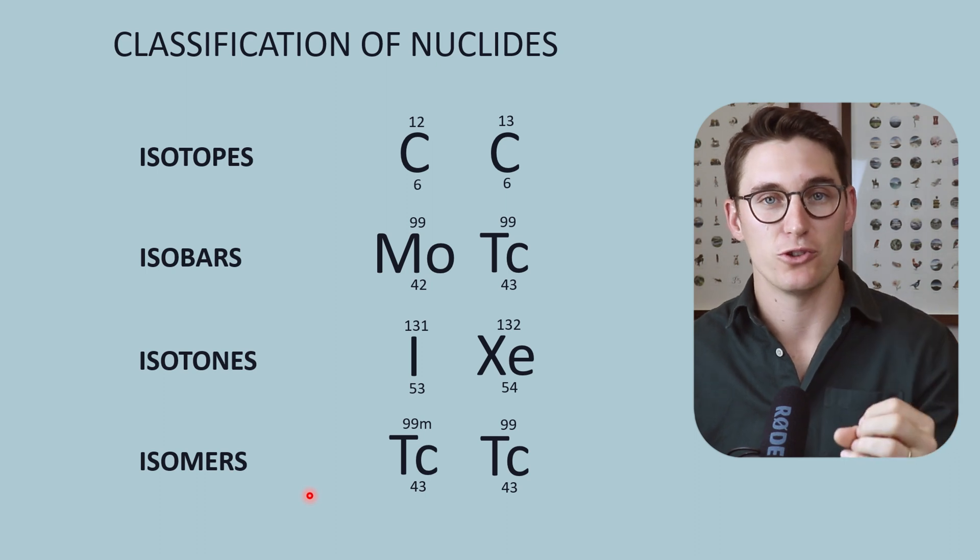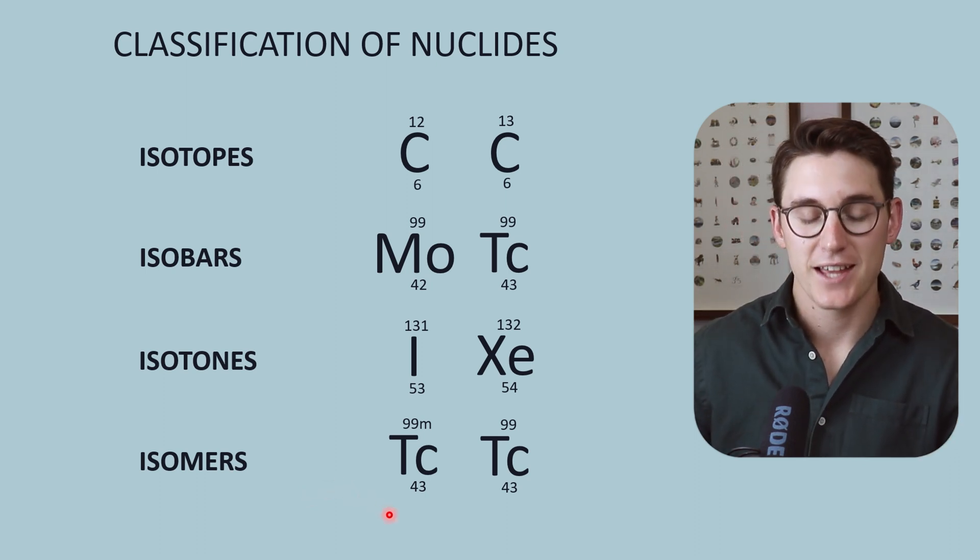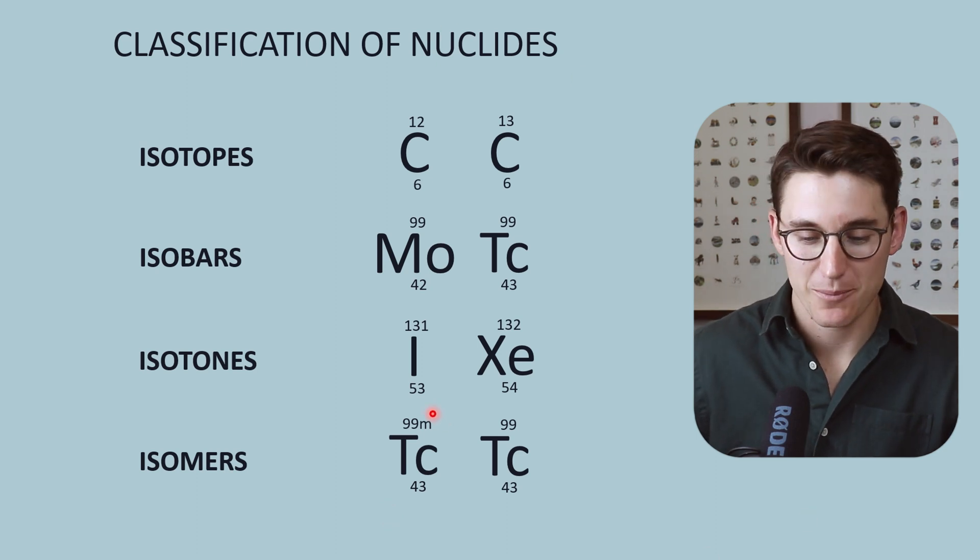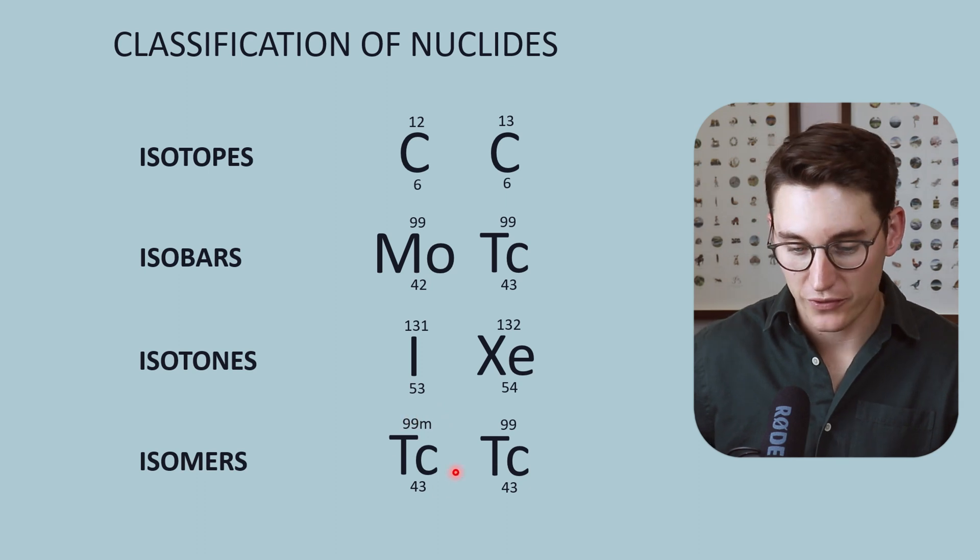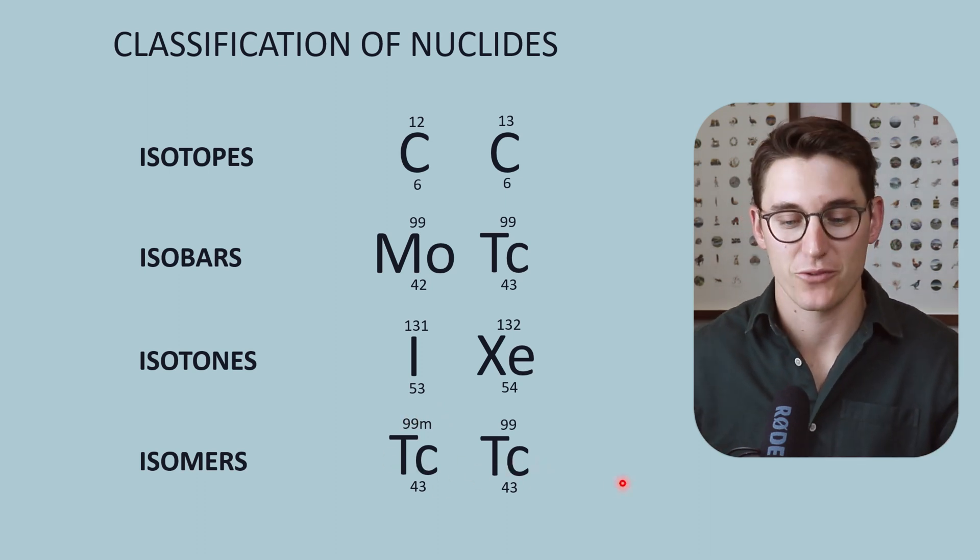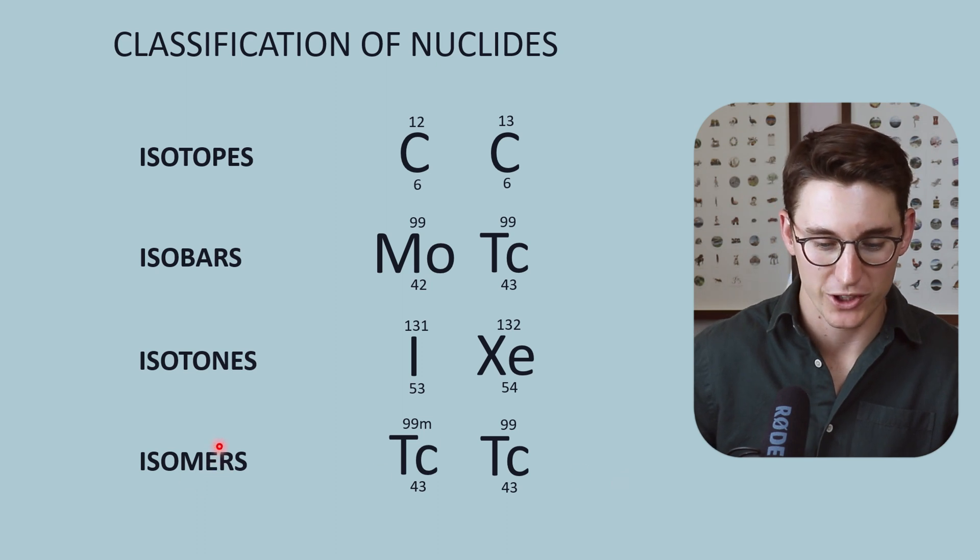It has the same atomic components—the same number of protons, neutrons, and electrons—but the energy configuration of that atom is slightly different. We get what is known as a metastable version of an atom. The atomic constituents of these two technetium atoms here are the same, but the energy level is different. This is what is known as an isomer. We can use this E here to remember that the energies are different.